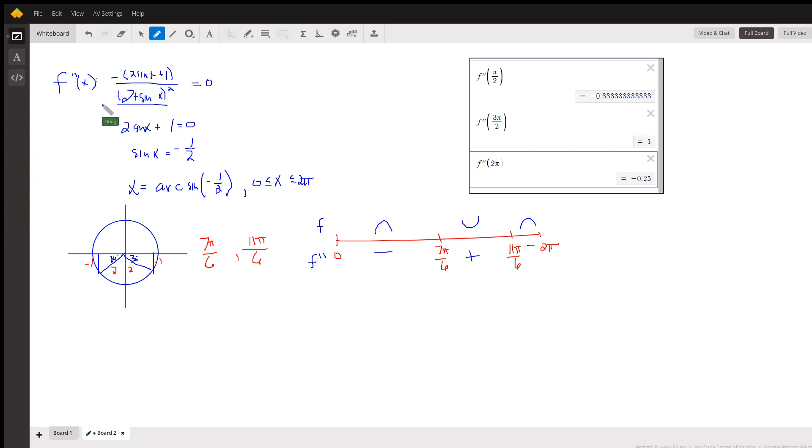So the second derivative will equal 0 when the numerator equals 0, which occurs when the sine of x is negative 1 half. So x is the angle that has a sine of negative 1 half between 0 and 2π. Here's a little unit circle with a reference angle of 30 degrees, which is the same as π over 6. So it's this angle that has a sine of negative 1 half, which if you add π over 6 to 6π over 6, you get 7π over 6. And if you subtract π over 6 from 12π over 6, you get 11π over 6.